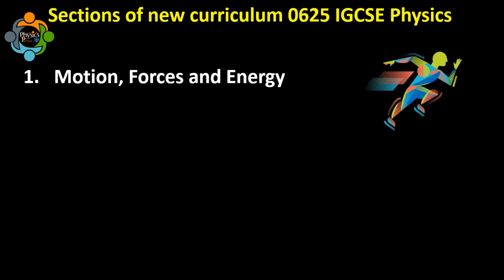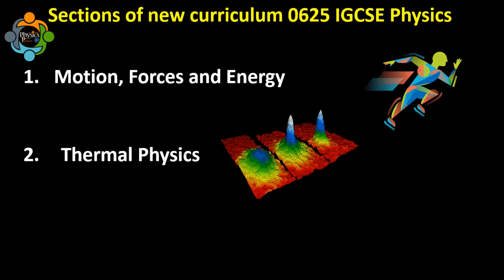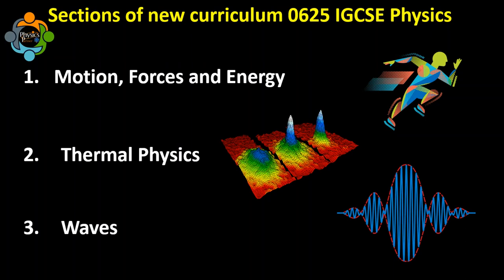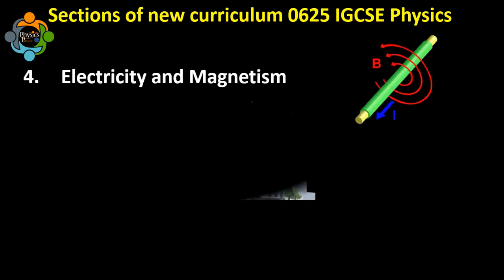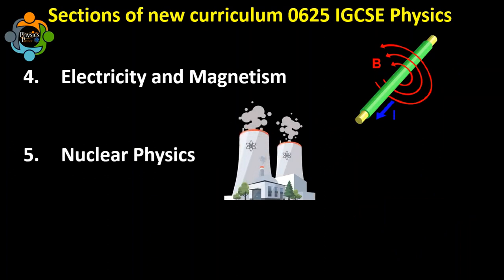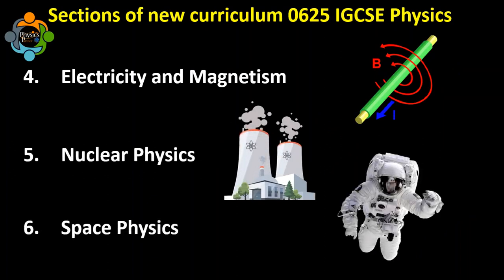Let's look at the sections in the new curriculum. The first section covers classical physics — motion, force, and energy. The second is thermal physics, and the third is waves. These sections existed in previous curriculums with slight changes in sub-contents. The fourth section is electricity and magnetism, the fifth is nuclear physics, and one completely new section has been added: space physics.